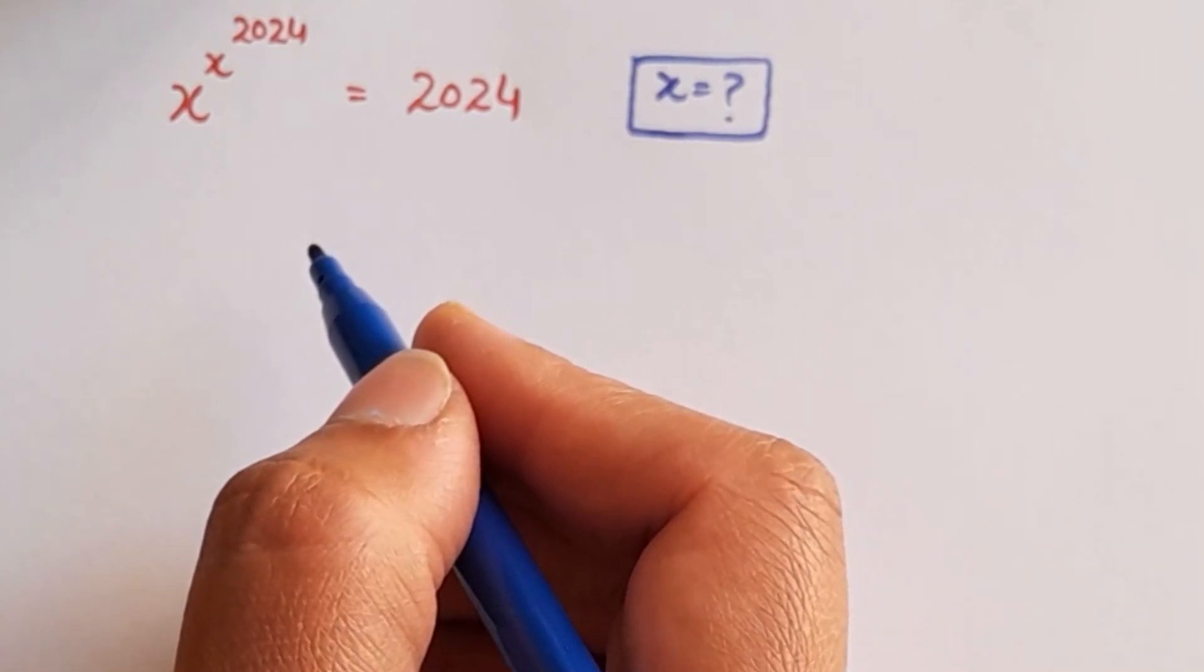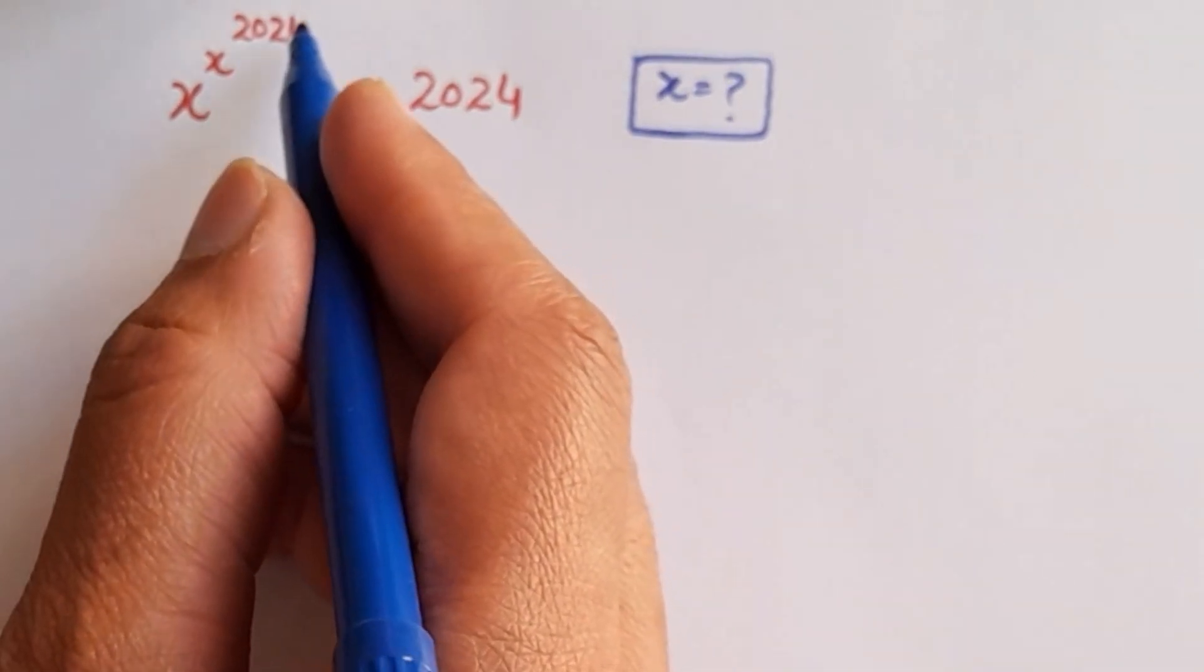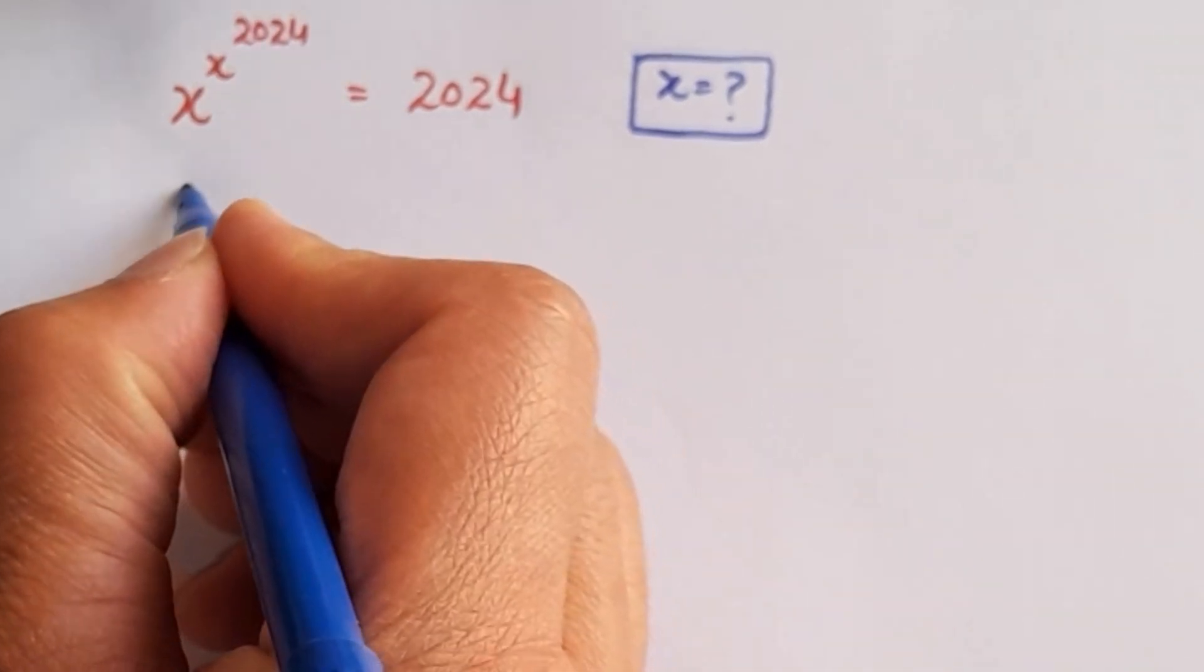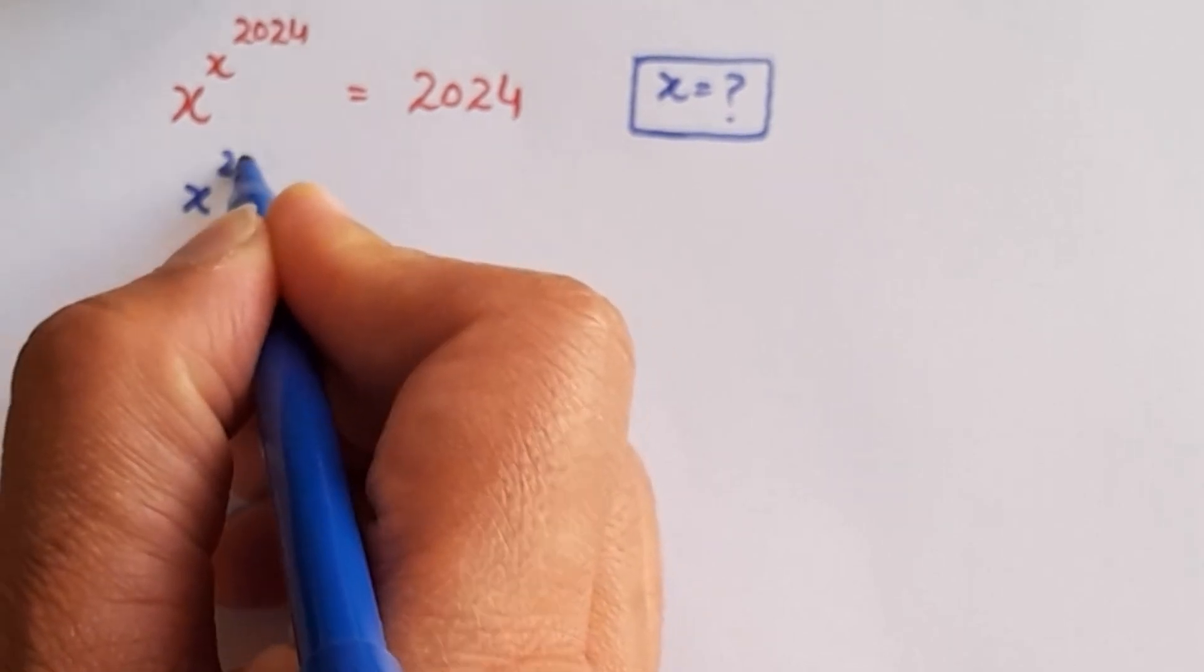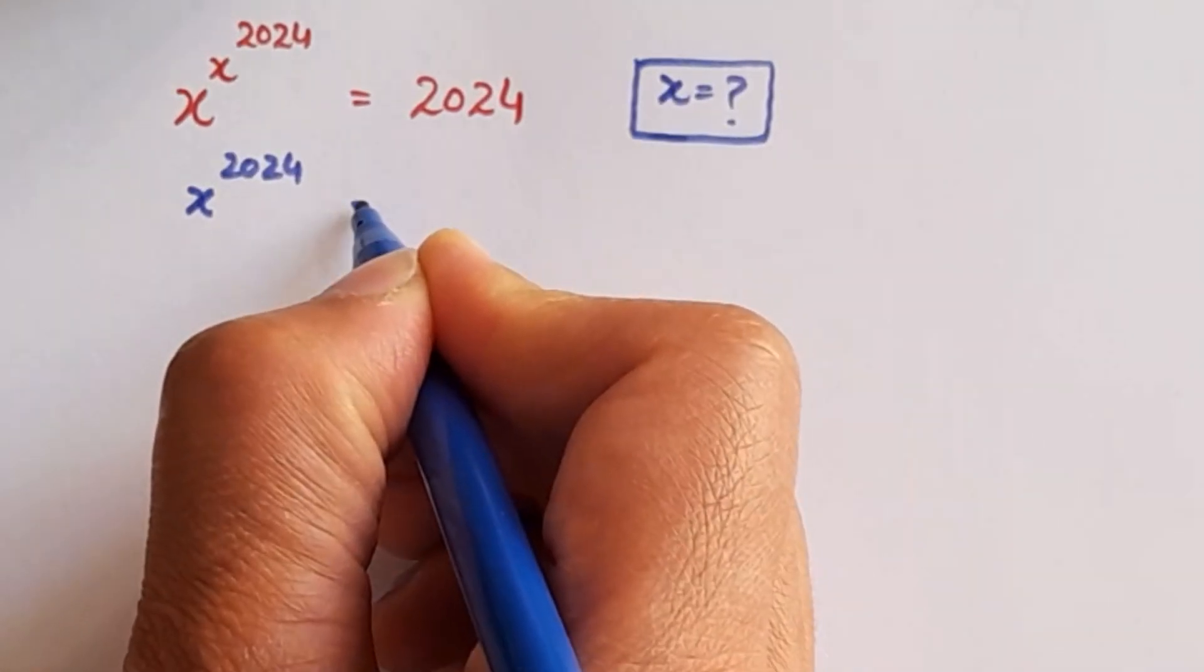In the very first step, we are going to let some values. Let this part x to the power 2024 equal any value a.